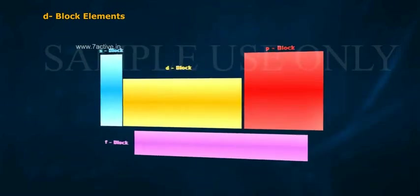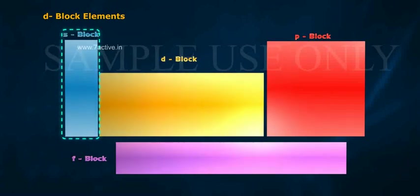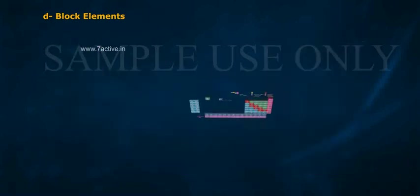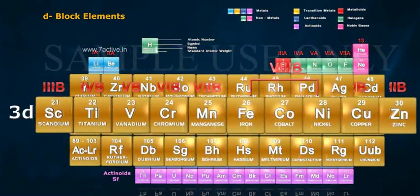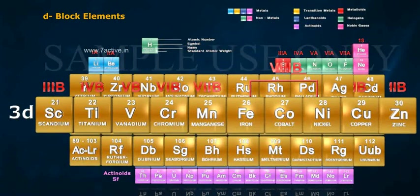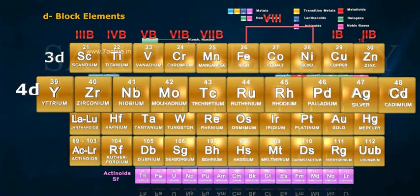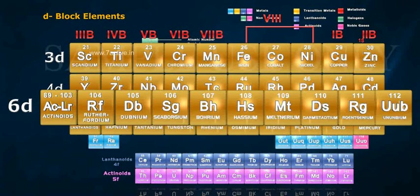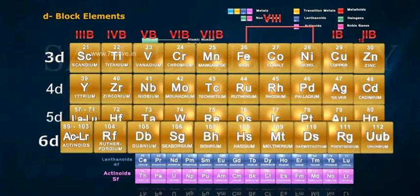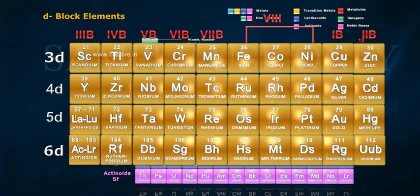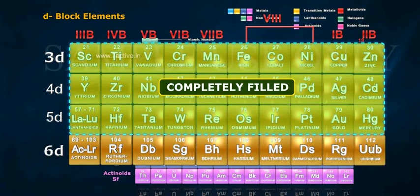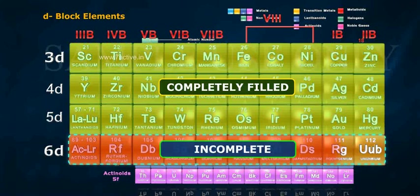These elements are placed in between s and p blocks in four series. They are 3D, 4D, 5D and 6D series. First three series of d blocks are completely filled with 10 elements in each series and 6D series is incomplete.